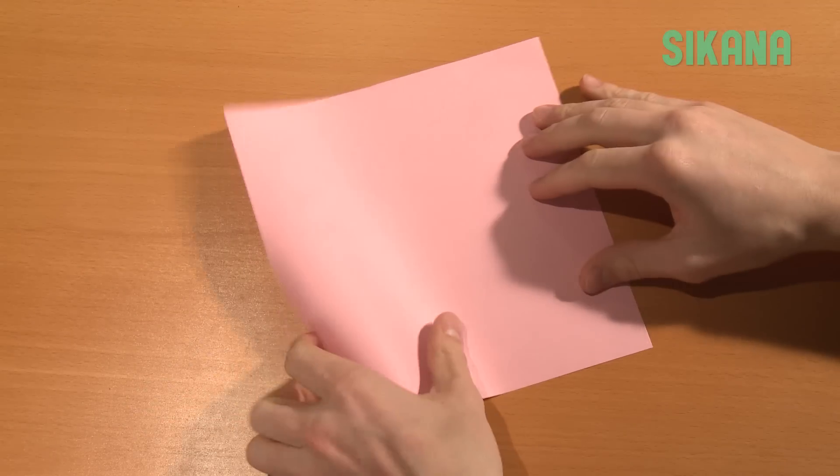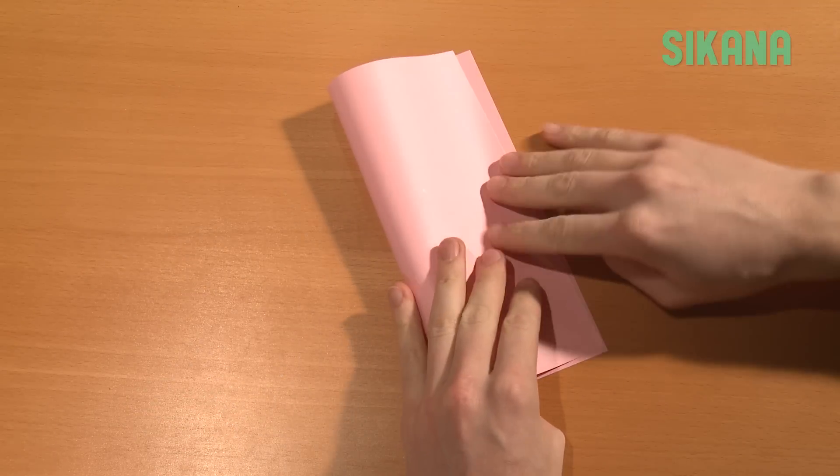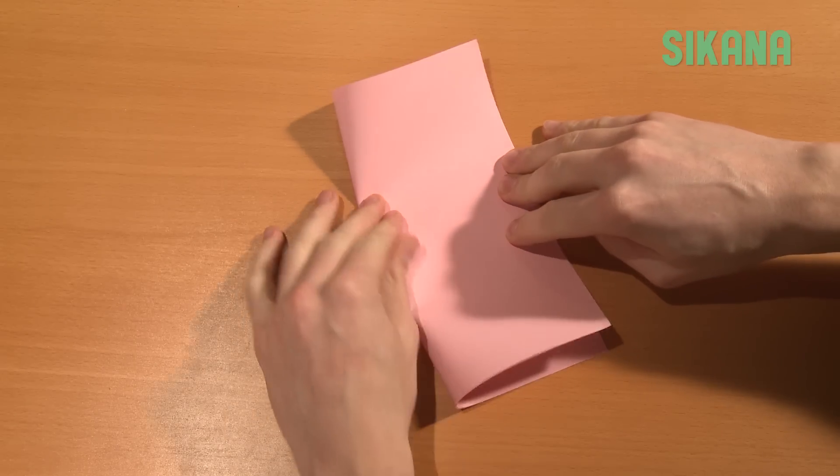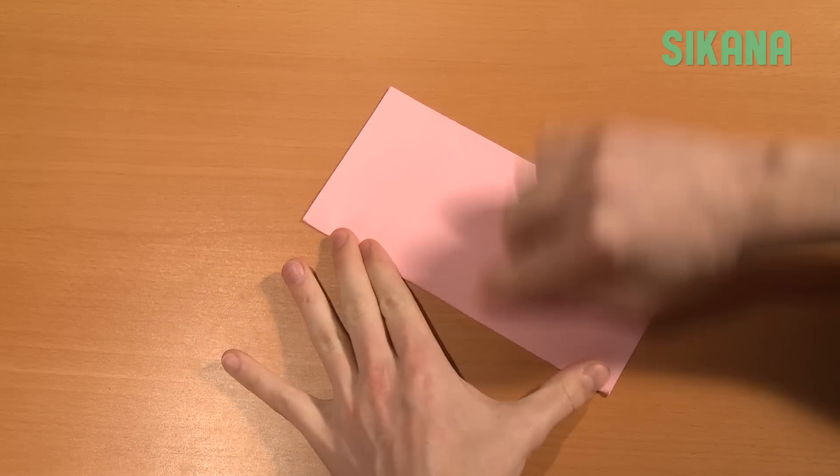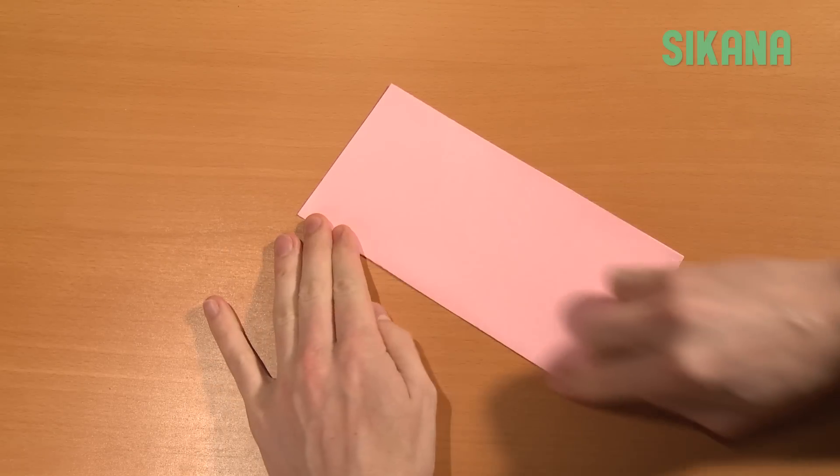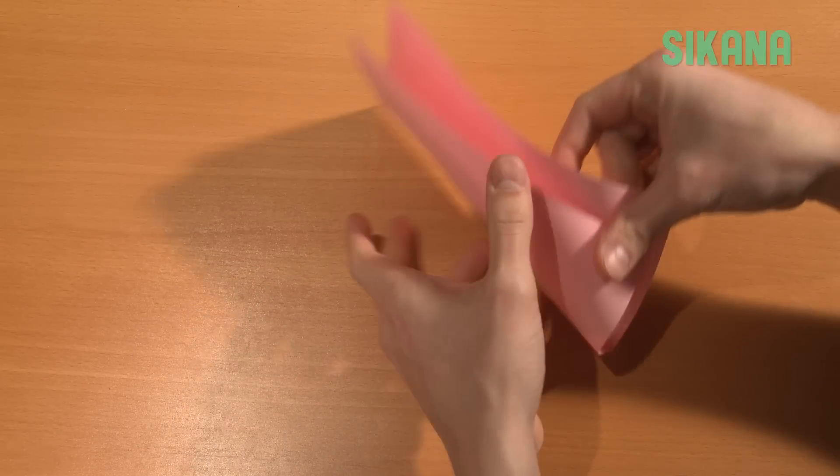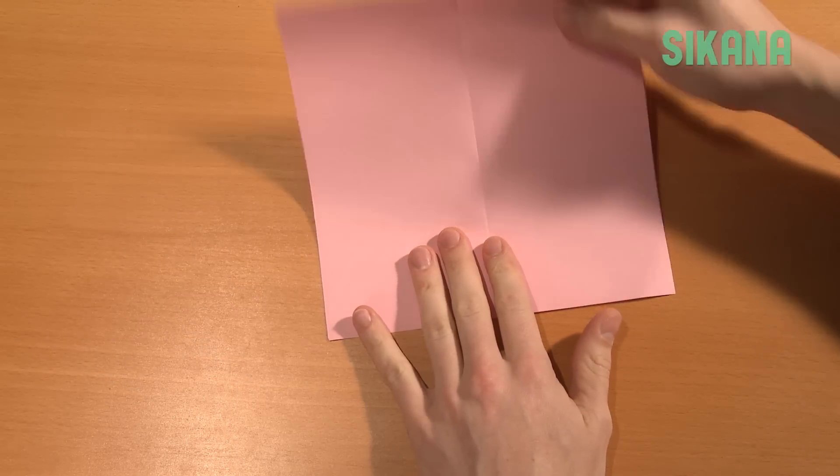Take a square sheet of paper and fold it in half. Open and fold in half the other way.